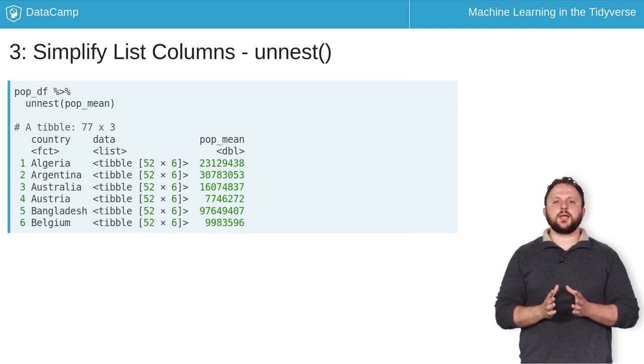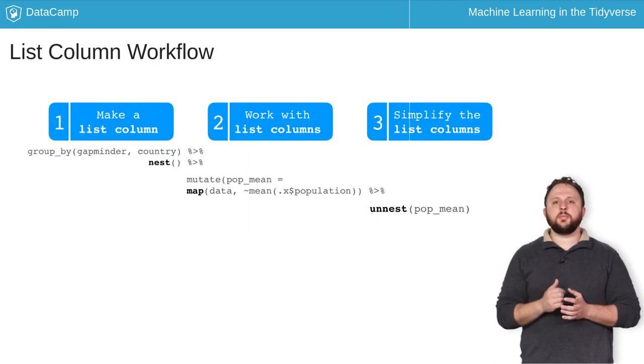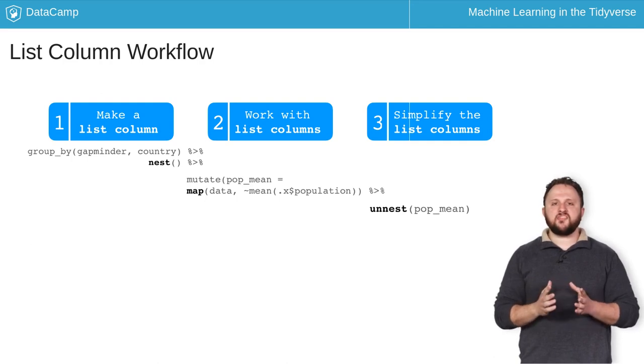Let's revisit these steps in the context of the list column workflow. First, we made a list column of data frames for each country using nest. Then, we worked with the list columns by calculating the population mean of each data frame using map. Finally, we simplified the resulting nested column with the unnest function.